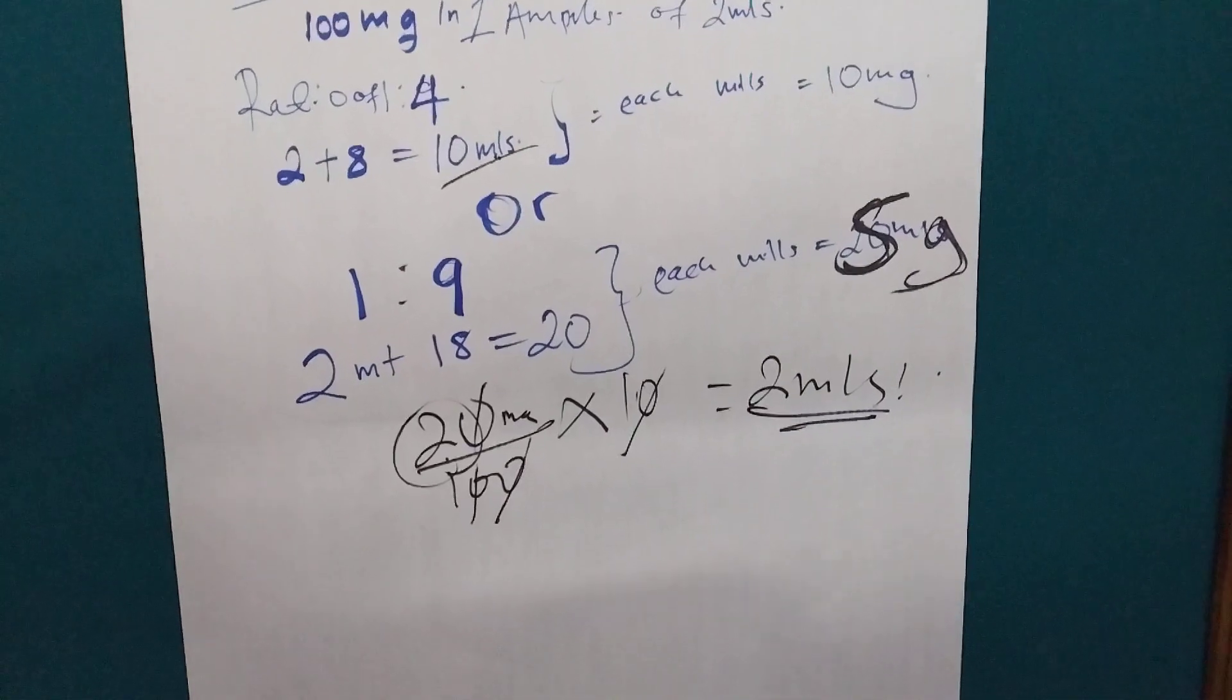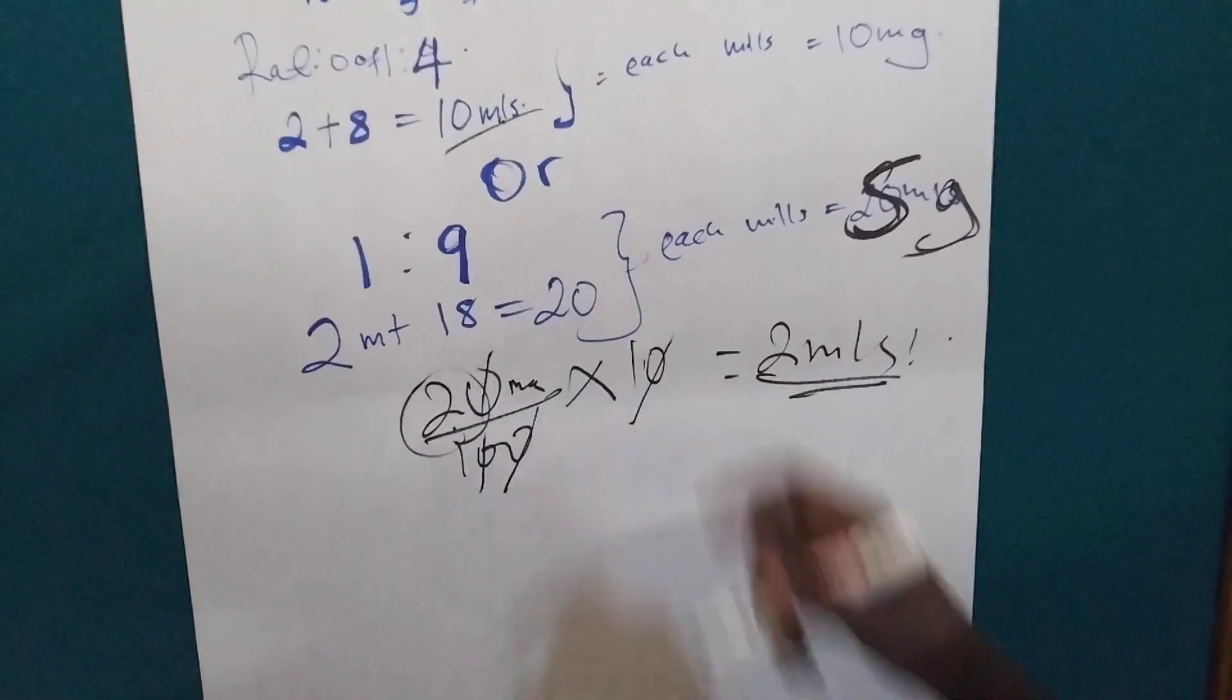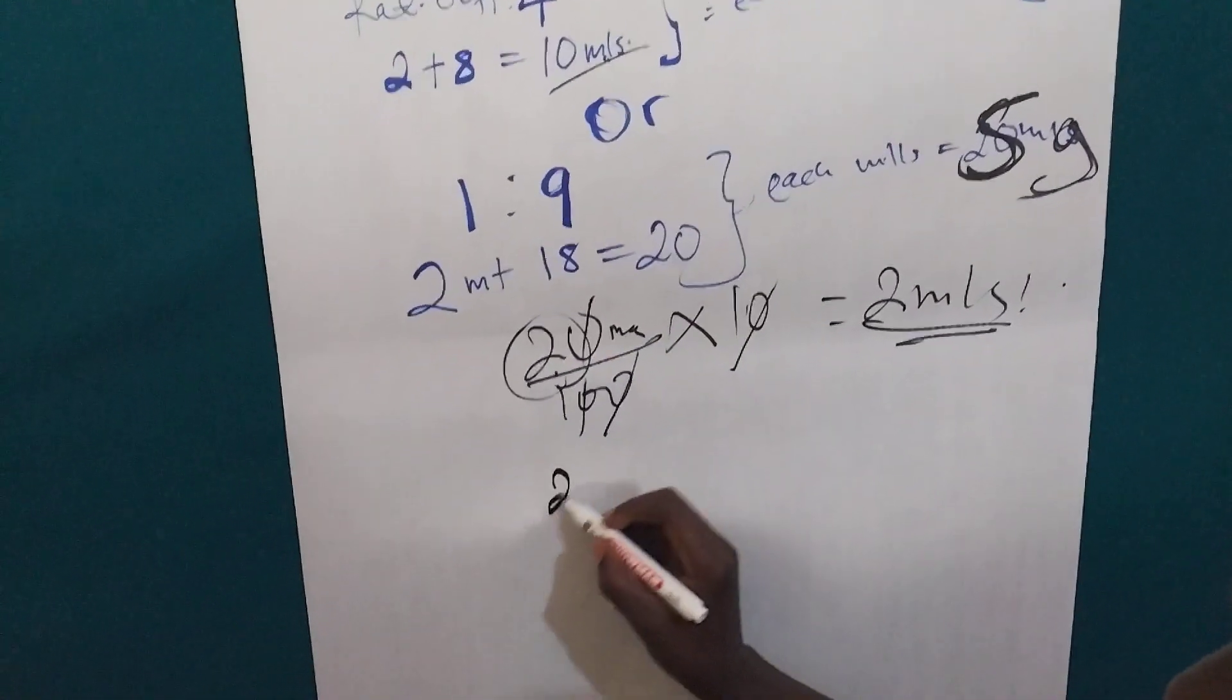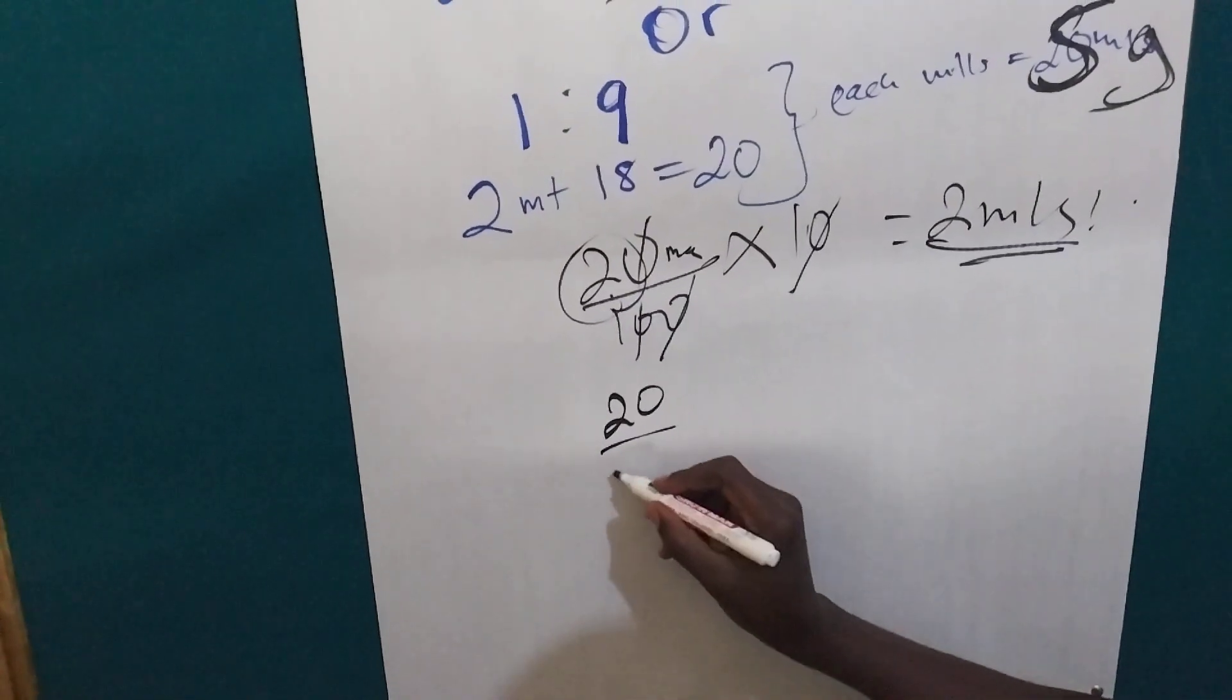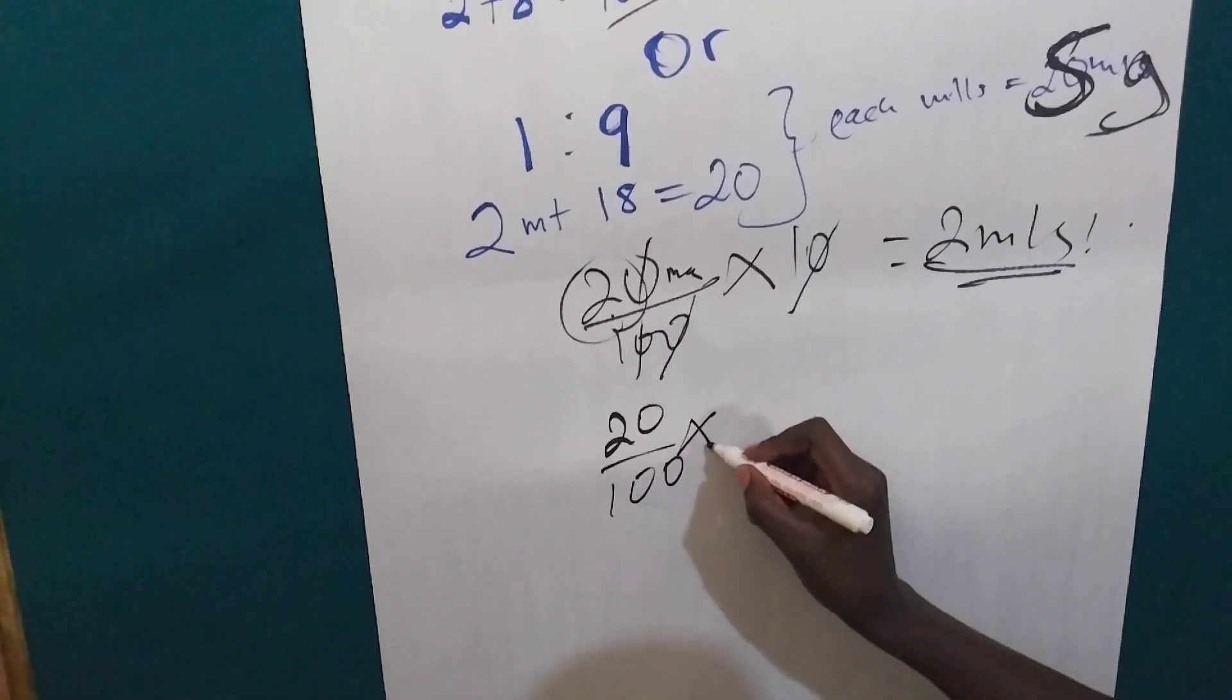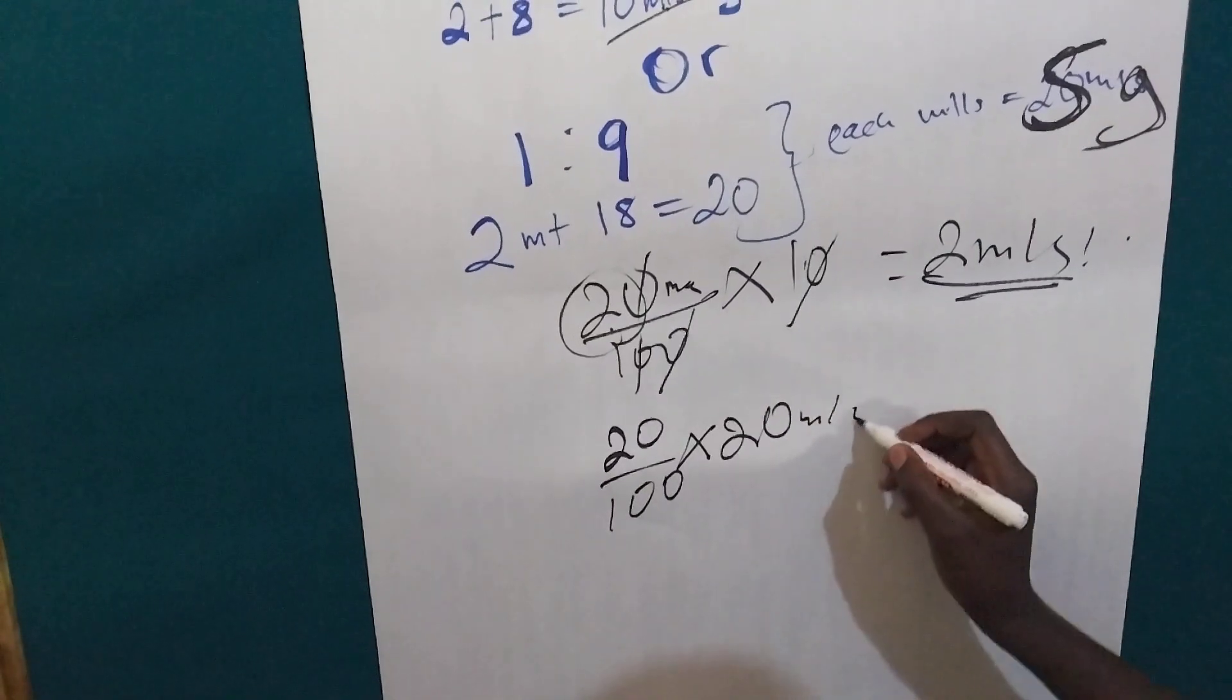Then, if we use the 1:9 ratio, then we calculate 20 out of 100 times 10.